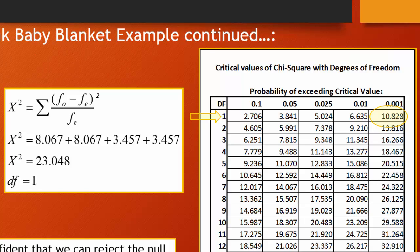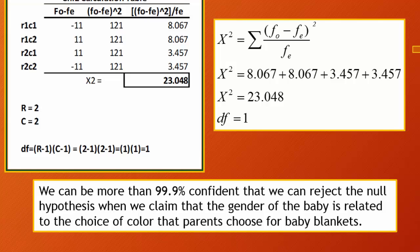With one degree of freedom, 23.048 is greater than the critical value for 90% confidence (alpha = 0.1) of 2.076, greater than the critical value for 95% confidence (alpha = 0.05) of 3.841, and all the way down to exceeding 10.828, where we'd have 99.9% confidence with alpha = 0.001. Because our 23.048 exceeds 10.828, we're at least 99.9% confident we can reject the null — less than a 0.1% chance of a type 1 error if we claim gender is related to parents' choice of baby blanket color.